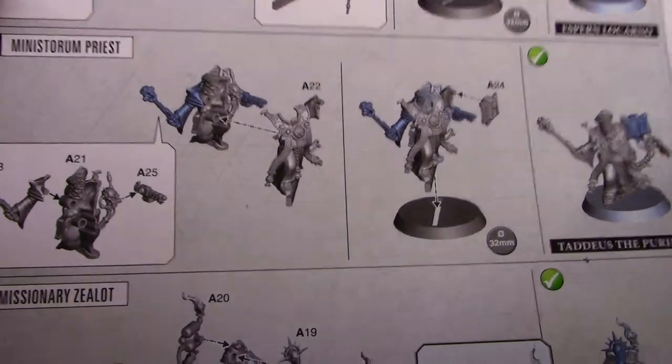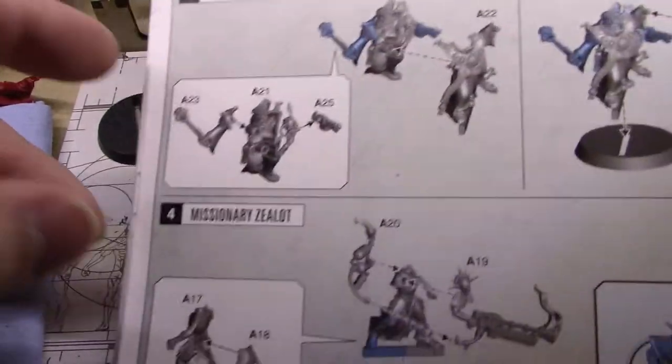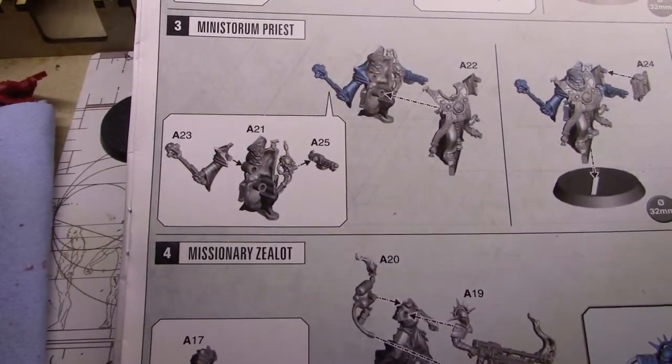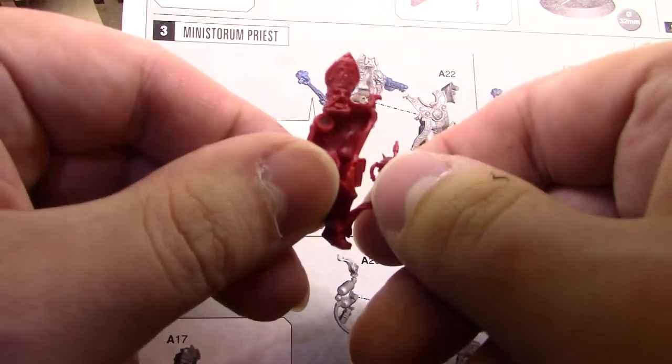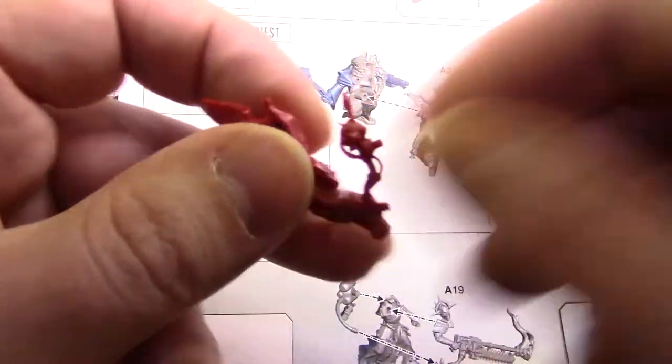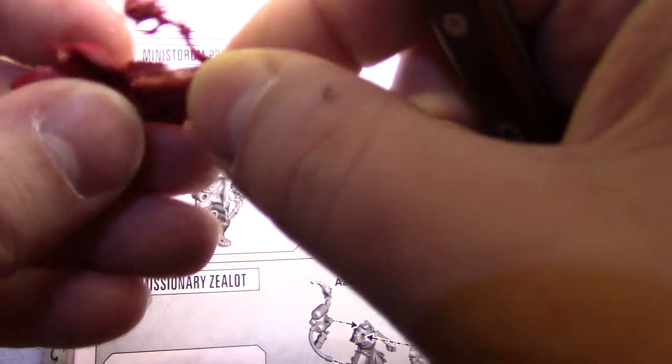I have already clipped the pieces from the sprue and I have cleaned the base. So we will start with piece 21 which is his body piece and we will check if it needs to have any mold lines removed. And believe it or not it looks pretty good.